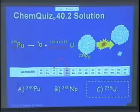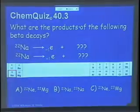And because it's so much fun, we do another one. Or at least I will display it to you. What are the products of the following beta decays? Sodium-22 emits a beta minus particle. What do I get? And sodium-22 emits a beta plus particle. What do I get? I won't have time to do this.